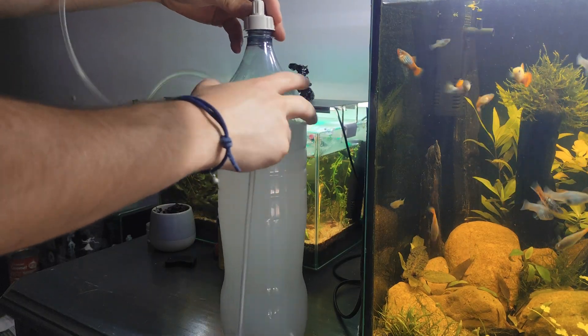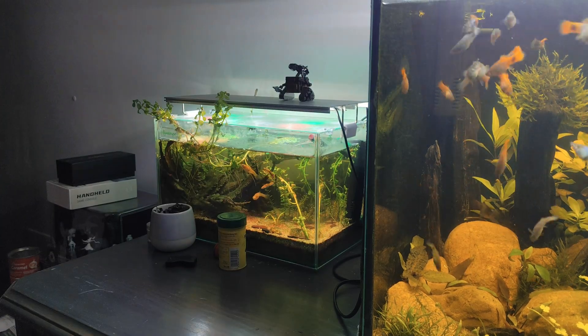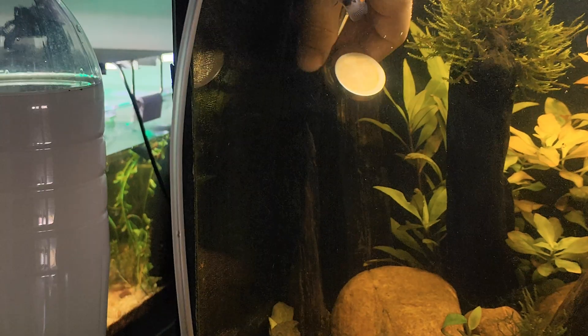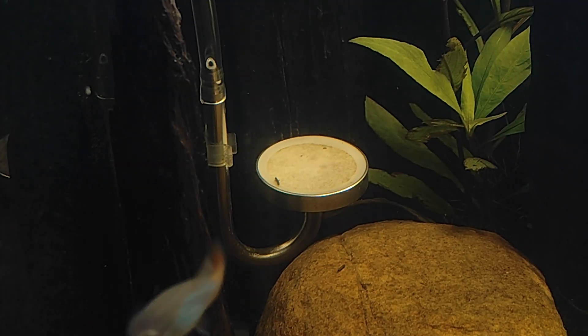Then screw on your CO2 valve cap or your DIY version, if that's what you're using. Place the diffuser inside the tank. Ideally, put it under the filter outlet or wherever there's good water flow. This helps the CO2 dissolve better throughout the tank.